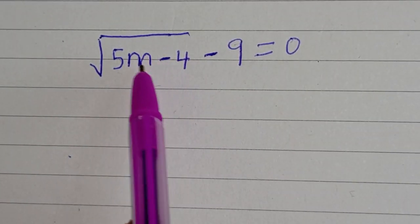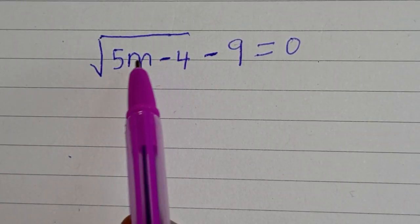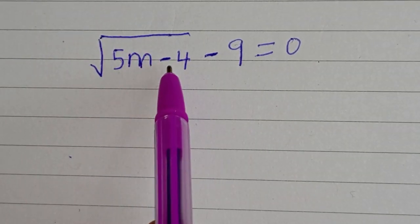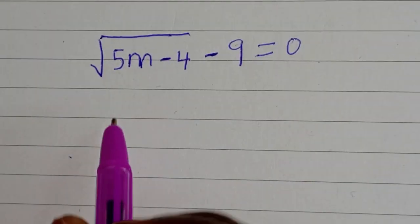Hello, welcome to Mathfocus. In this class we want to find the value of m from this given radical problem: square root of 5m minus 4 minus 9 is equal to 0.